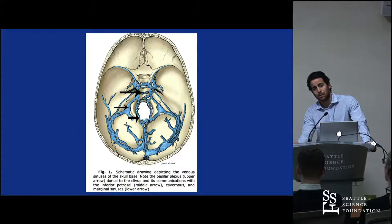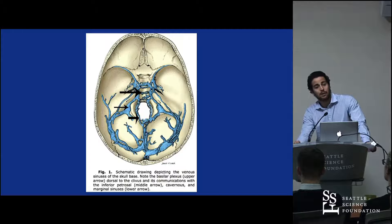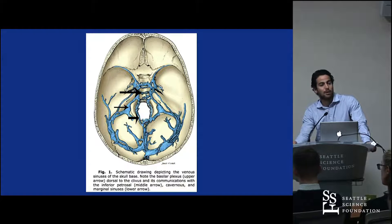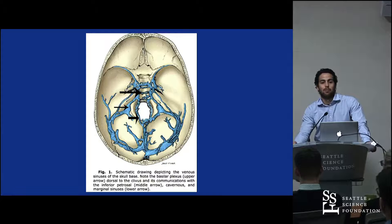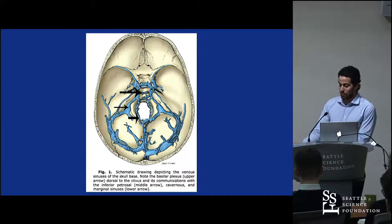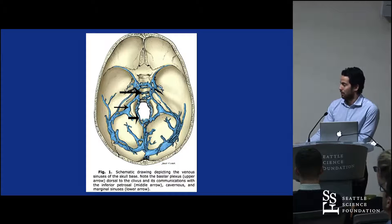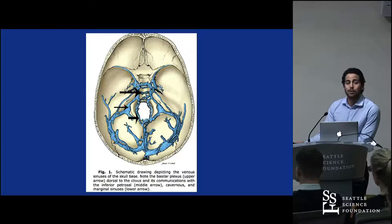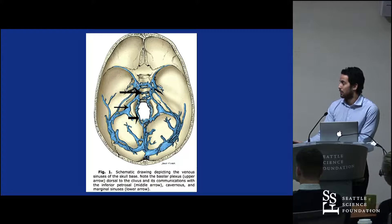An important anatomical landmark that has been described is the superior nuchal line. The transverse sinus is located approximately half a centimeter above the superior nuchal line. When performing a craniotomy or burr hole, it is important to know this so you do not damage the sinus.